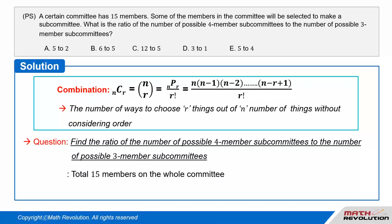We have to find the ratio of the number of possible four-member subcommittees to the number of possible three-member subcommittees, if there are a total of 15 members on the whole committee to choose from. Committee and combination both start with the letter C, so when you see committee, immediately think of combinations.